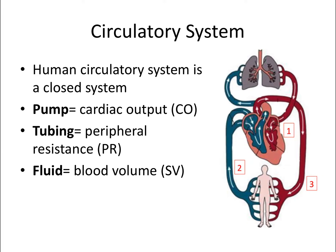The specific parameter is called stroke volume, or SV — that's the volume of blood pumped from the left ventricle every heartbeat. So the combination of the pump, tubing, and fluid determines the pressure within this closed system.